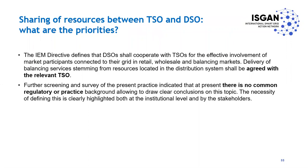On sharing of resources between TSOs and DSOs: flexible resources from distribution can be used for multiple purposes — resolving congestion in the distribution network, resolving congestion in transmission, or for balancing at system level. The IEM Directive states DSOs shall cooperate with TSOs, and delivery of balancing services from distribution-connected resources shall be agreed with the relevant TSO. However, screening and survey of present practice indicated there is currently no common regulatory or practice background allowing clear conclusions on this topic, and the need for defining this has been highlighted by several stakeholders.